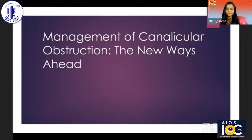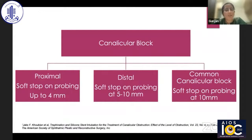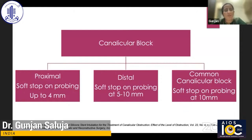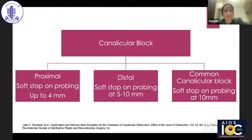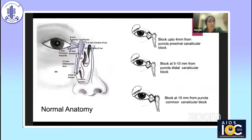At the outset, I would like to thank AIOS for giving me this opportunity. So coming to canalicular blocks — canalicular blocks can be widely classified as proximal, distal, and common canalicular blocks, depending upon where we find the stop from the puncta. To label it as a proximal canalicular block, we should find a soft stop on probing up to 4 mm.